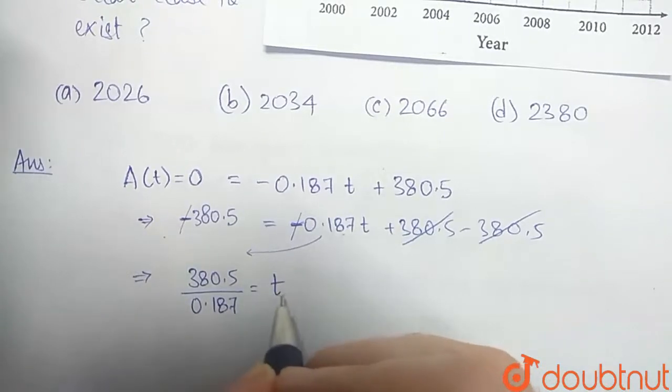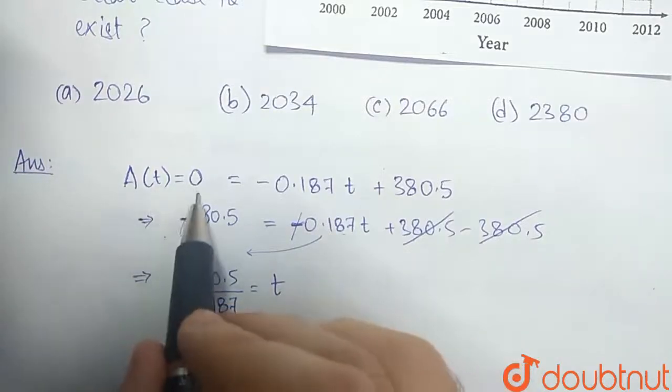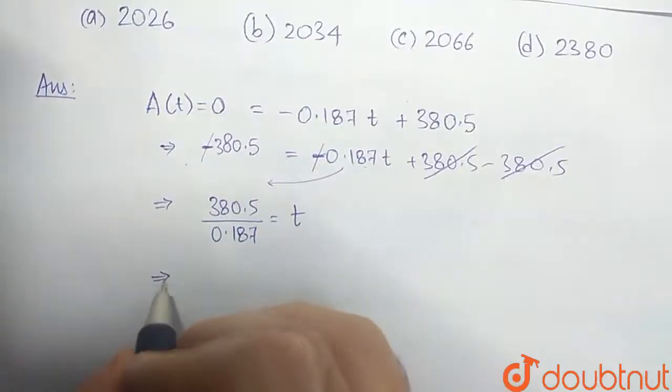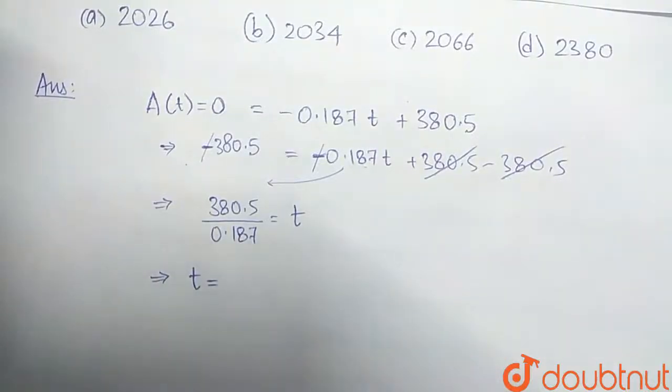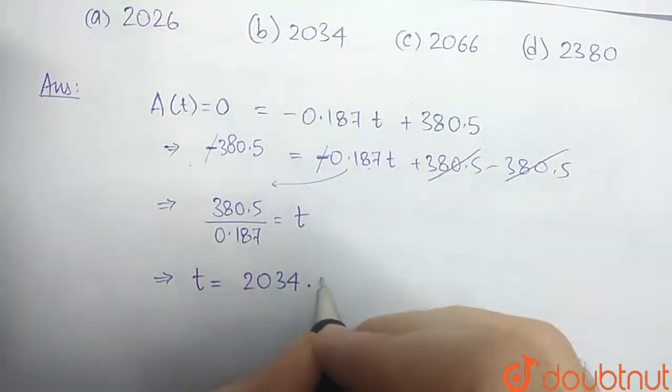Here, t is the required year where the Arctic sea ice becomes 0. So the t obtained from this equation is 2034.75.